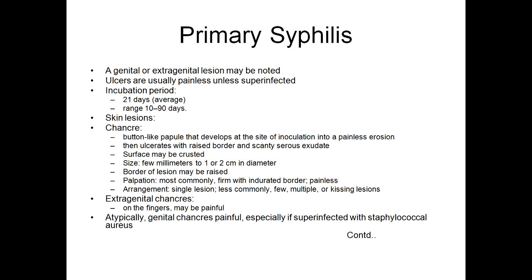The most important skin lesion is the chancre — a button-like papule that develops at the site of inoculation into a painless erosion, then ulcerates with a raised border and scanty serous exudate. The surface may become crusted. Size ranges from a few millimeters to one to two centimeters in diameter. The border may be raised; on palpation it is mostly firm with an indurated border and is non-tender. Arrangement can be a single lesion, a few, multiple, or kissing lesions.